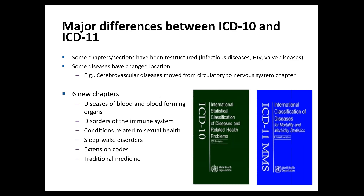Some other major differences: there are revisions and restructuring of some chapters and sections, such as the infectious disease chapter, HIV, and valvular diseases. Some diseases have changed location — for example, cerebrovascular diseases has moved from circulatory to the nervous system chapter. There are six new chapters in ICD-11. Extension codes is a new feature completely unique to ICD-11. And for the first time, there is a chapter on traditional medicine in ICD-11 — meaning the actual diagnoses used in traditional medicine, not the services performed.